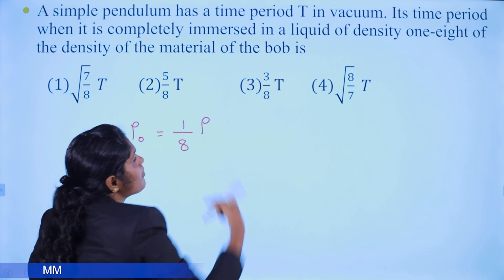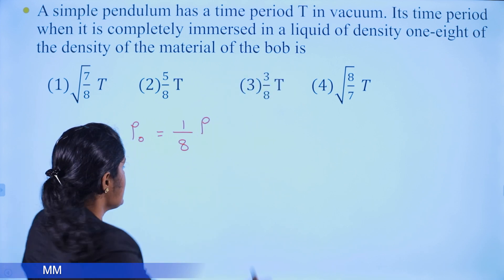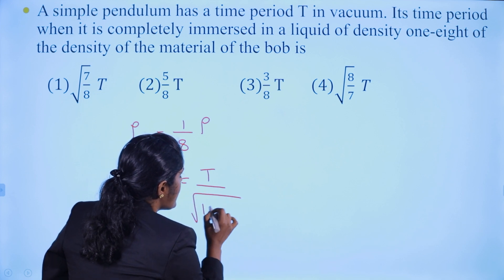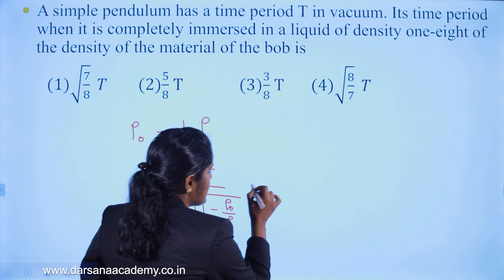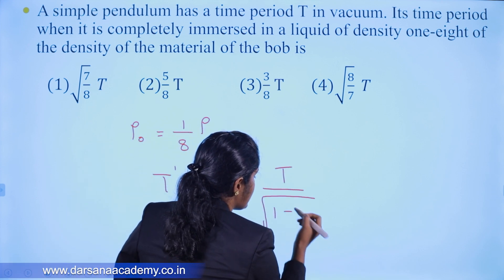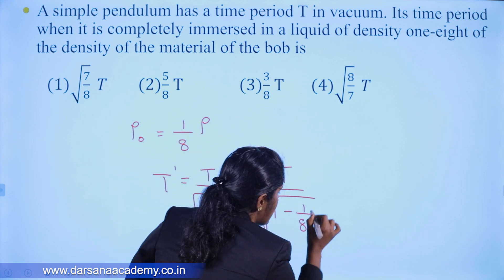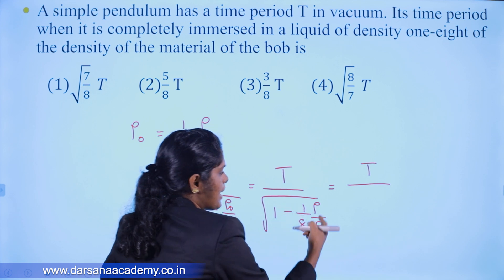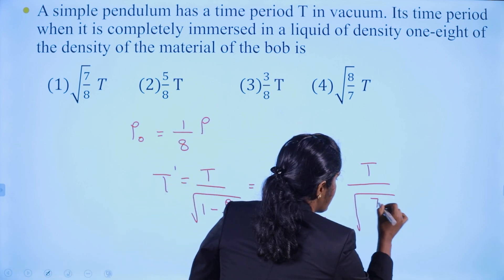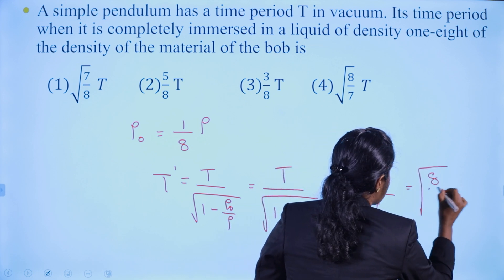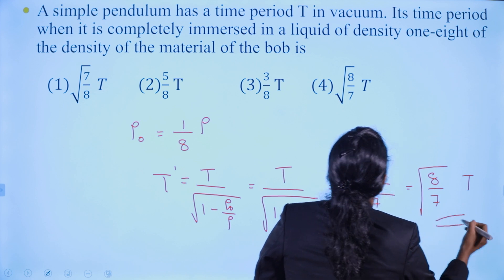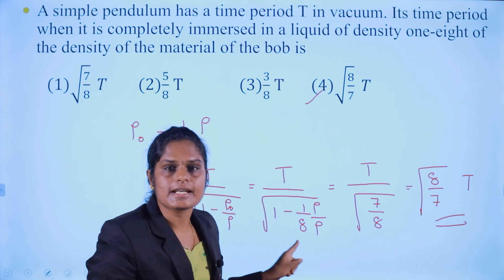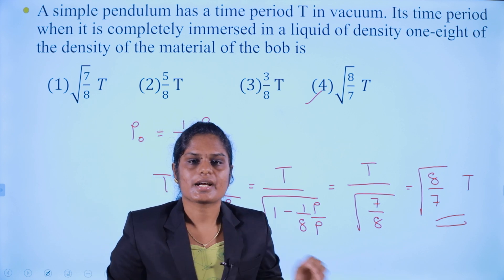For example, if the material density is (1/8)ρ — wait, the liquid density is ρ₀ = (1/8)ρ where ρ is the bob material density. T' = T/√(1 - ρ₀/ρ) = T/√(1 - (1/8)) = T/√(7/8) = T × √(8/7). So the answer is T√(8/7). It's easy — you can solve it in 10 to 20 seconds.